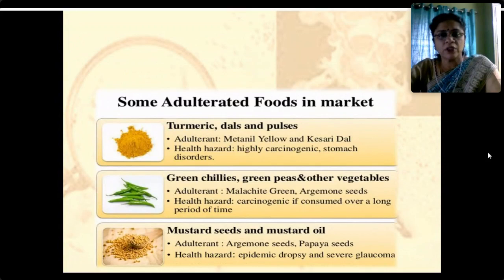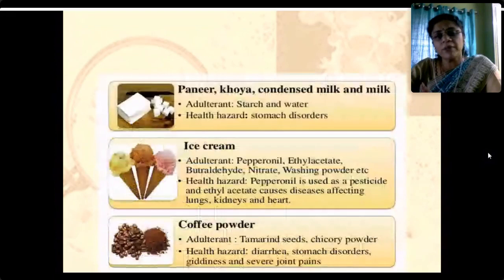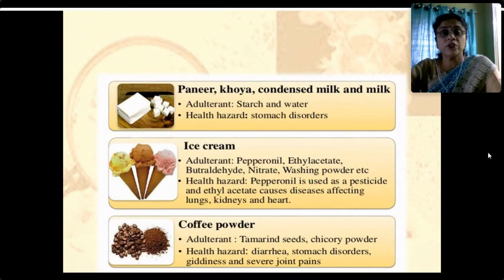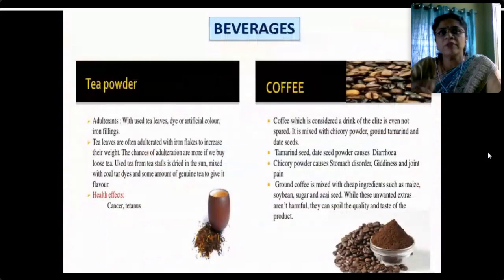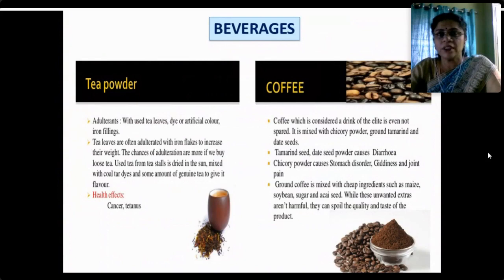Other adulterated foods in the market include turmeric, dals and pulses. Turmeric is adulterated with metanil yellow; kesari dal is adulterated with ordinary dal; green chilies, green peas and other green vegetables are coated with malachite green to give a dark green color. Mustard seeds and mustard oil are adulterated with argemone seeds and papaya seeds. Ice cream's adulterant is piperonyl and ethyl acetate, plus washing powder. Coffee powder is adulterated with tamarind seeds and chicory powder, causing severe joint pain.